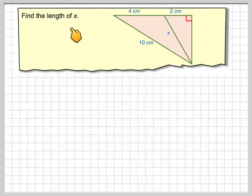Find the length of x. So x is this length here, and what we've got here is a right-angled triangle here, and then we've got another right-angled triangle drawn in here.